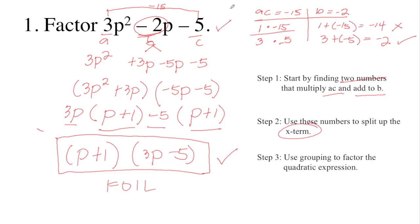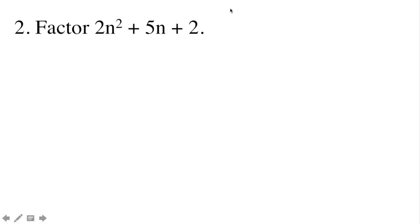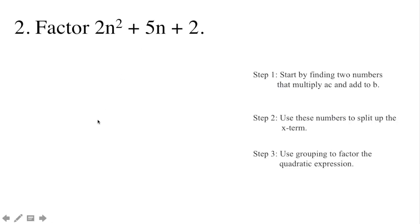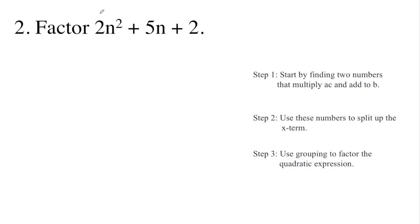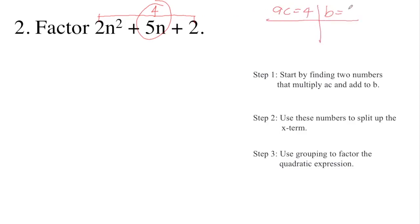Next example: factor 2N squared plus 5N plus 2. First, multiply A and C. A is 2 and C is 2, so that is 4. Our goal is to find two numbers that multiply to AC and give us a sum of B, which is 5. So AC equals 4 and B is 5. Starting with 1: 1 times 4 is 4, and 1 plus 4 is equal to 5.